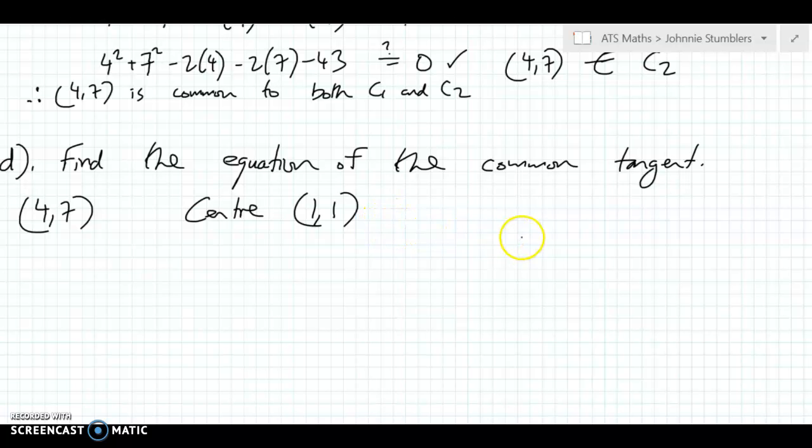Anyway, I'm going to sketch it out here. This is what we know already. We know that these circles touch internally like this. And they touch here at 4, 7. We know that the center of the big one is 1, 1. So we're looking for the equation of the common tangent, which is going to be a straight line that just touches both circles at 4, 7.